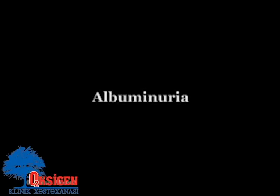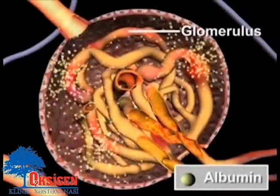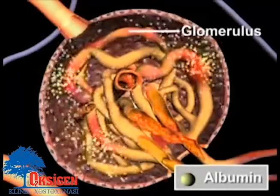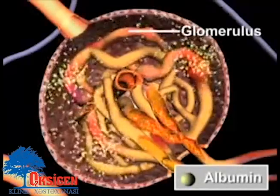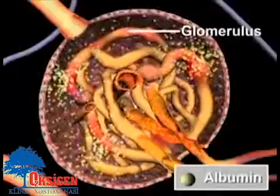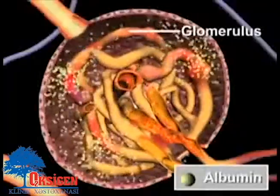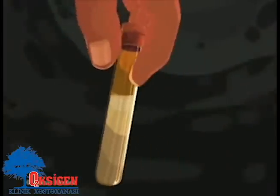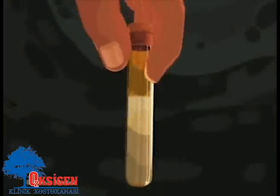Albuminuria is a pathological condition where more than normal amounts of albumin are present in the urine. High levels of albumin in the urine may be an indication of kidney disease.